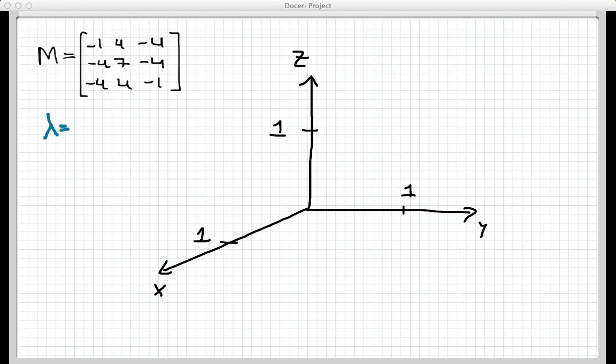was that lambda equals negative 1 was an eigenvalue for this matrix, and an eigenvector that corresponds to it is [1, 1, 1].